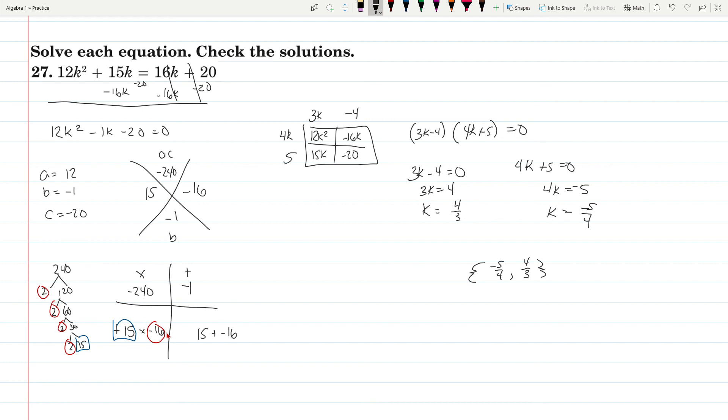I do think this was, for me at least, the hardest question to come up with. So you have the 12k squared, the negative 20, negative 16k, and 15k. And from there you're just factoring. 3k, negative 4, 4k, 5. 3k minus 4 times 4k plus 5 equals 0. Set them equal to 0.